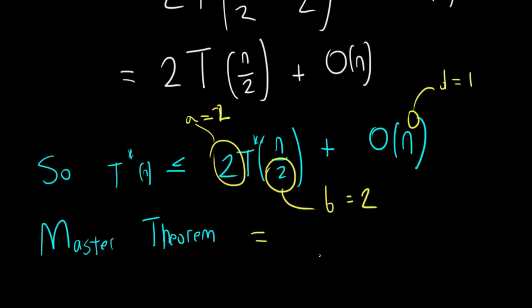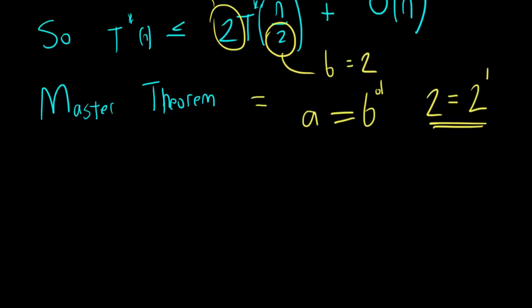So by the master's theorem, we know that we are comparing A to B^D. So we are comparing 2 to 2 to the 1. These are going to be equal to each other. So A is equal to B to the power of D, which means we are going to use for our runtime over here. Big O of N log N. That will be our runtime.